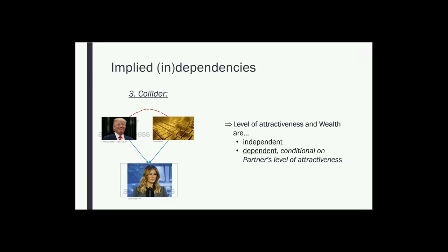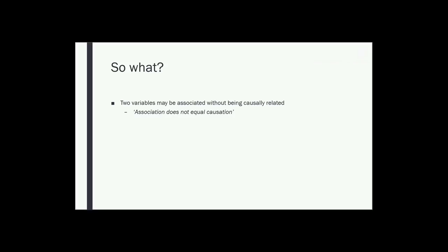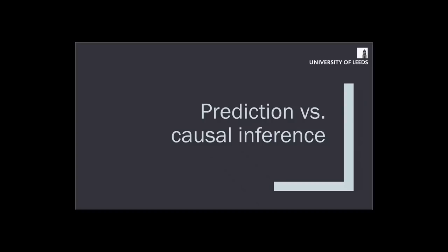I've introduced causal graphs to illustrate how two variables can be associated without being causally related, and to draw a more formal distinction between a predictor and a cause. In each of the three causal structures, you might consider A to be a predictor of C, but in only one of them is A actually a cause of C. In the collider structure, A only predicts C conditional on another variable B. With that in mind, I'll move on to a more formal definition of the distinction between prediction and causation — the target of causal modeling, which is causal inference.